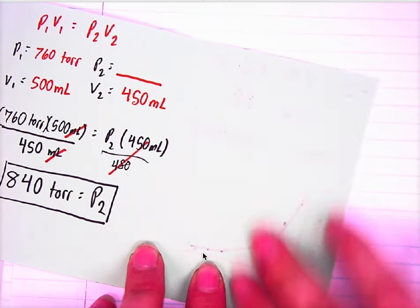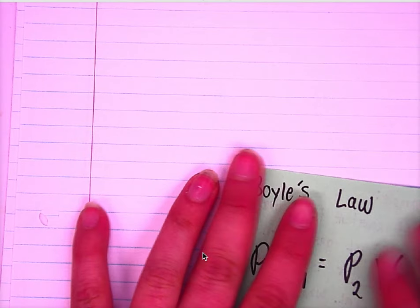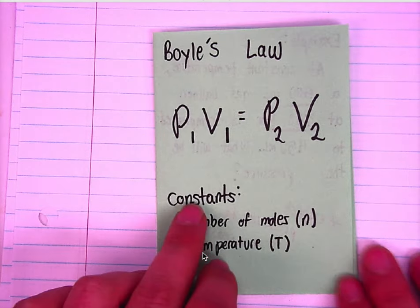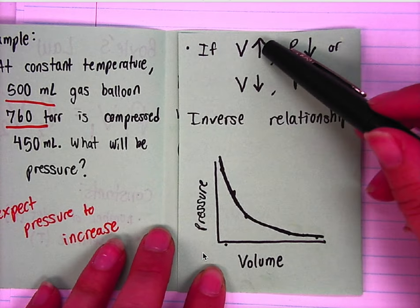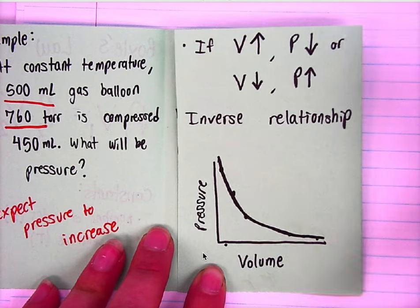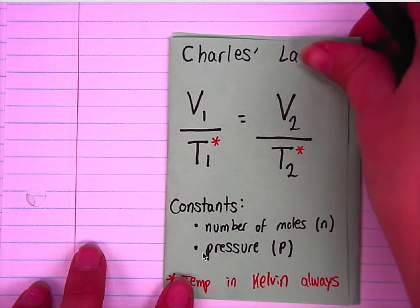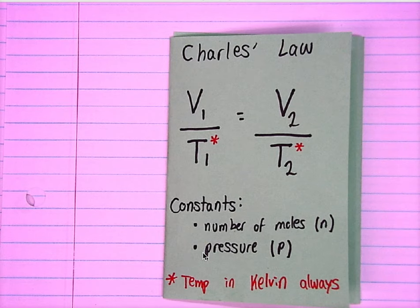Let's move on to the next one. Again, leave the last flap open — we're going to use it another day. So that is Boyle's Law: P1V1 equals P2V2. If the volume goes up, the pressure goes down. If you have a low volume, you have a high pressure. Make sure it's an inverse relationship and we can do the math. The next one we're going to look at is Charles' Law, where V1 over T1 equals V2 over T2. Our constants are the number of moles and pressure. Remember to keep the temperature in Kelvin always.